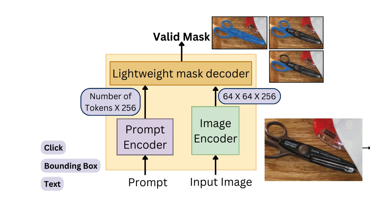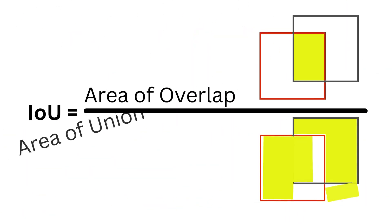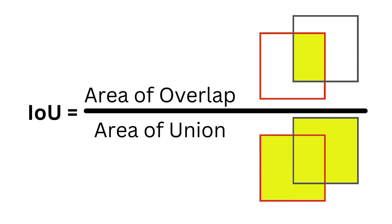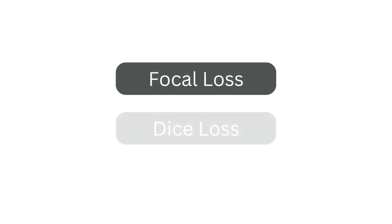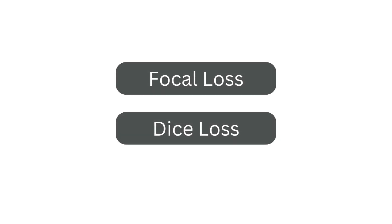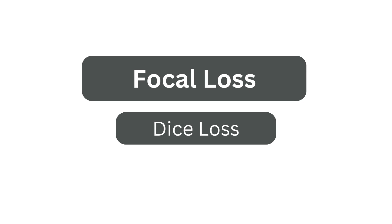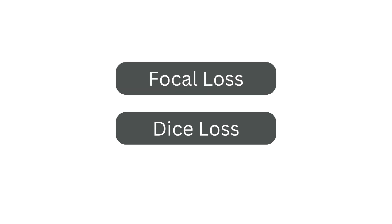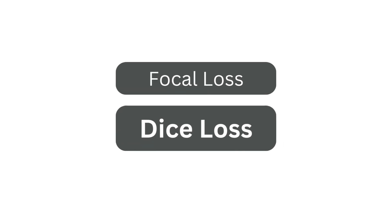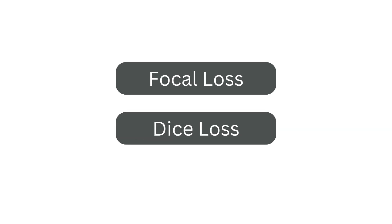Training SAM is a meticulous process. The authors calculate intersection over union, or IOU, scores for each predicted mask against the ground truth, with the mask boasting the highest IOU becoming the anchor for computing the loss. For training the mask output, SAM employs two potent losses: the focal loss and the dice loss. The focal loss is a variant of cross entropy that assigns higher weights to challenging examples and lower weights to easier ones. Simultaneously, the dice loss gauges the overlap between predicted and target segments. SAM also predicts the IOU score for each of the three masks, introducing a layer of self-awareness. This prediction, trained using mean square error loss, equips SAM with its confidence score.